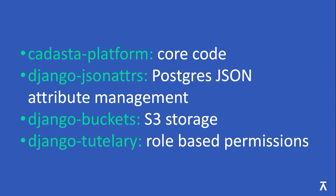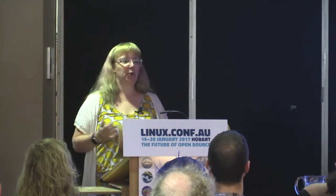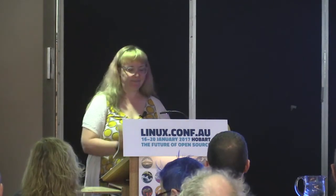We also released an S3 storage library for similar reasons — it didn't quite work for our purposes. Last but not least, the thing I'm most excited about is Django Tutelary, which is role-based permissions. It allows you to give people individual attribute permissions. Right now we do it at the row level — so you can say you have access to this row of data but not that one. If you're collecting property rights data, maybe you don't want everyone collecting data to have access to everything. We developed this for our own purposes, but I'm hoping someone else finds it exciting.